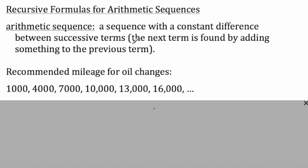A quick glance at this sequence reveals that to generate each term after the one you're on, you simply add 3,000. The next term — the term that follows in the sequence — can be found by adding something to the previous term. In this case, we're adding 3,000.